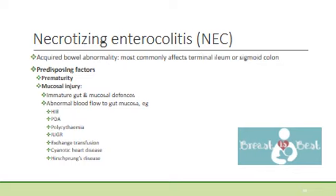In polycythaemia, especially with hyperviscosity syndrome, there is sludging of the red blood cells through the microvasculature, leading to relative hypoxia and ischaemia. Babies born small for gestational age are exposed to chronic hypoxia and underperfusion of non-essential organs, making them a high-risk group for NEC. Exchange transfusion, especially through umbilical lines, can be a risk factor. Babies with cyanotic heart disease often have very low saturation targets and are relatively ischaemic. In Hirschsprung's disease, aganglionosis of a segment causes severe proximal dilatation of the gut, which can lead to poor perfusion of the mucosal lining. This condition commonly affects the terminal ileum or sigmoid colon.